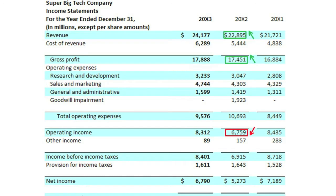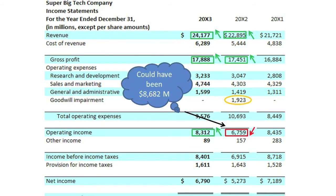Then, from 20X2 to 20X3, its revenues and gross profits grew again, but this time its operating income also grew. What caused the operating income decline in 20X2 and the increase in 20X3? If you said that the major cause of the decline was a $1,923,000,000 goodwill impairment in 20X2, you would be right. Had such goodwill impairment not been recognized in 20X2, its operating income would have actually increased from $8,435,000,000 in 20X1 up to a revised $8,682,000,000 in 20X2, rather than decreased.